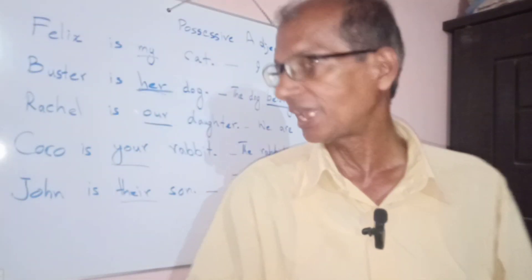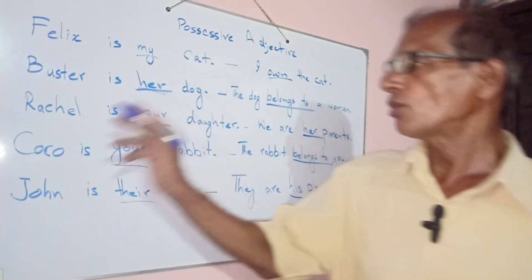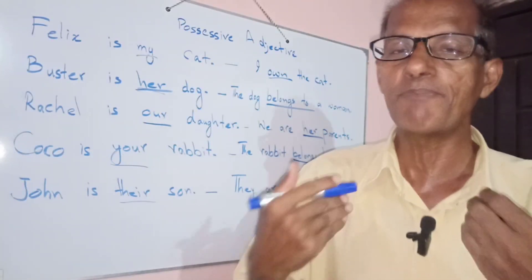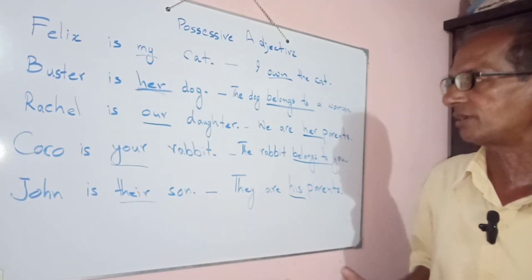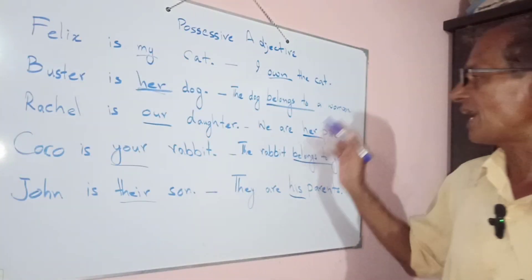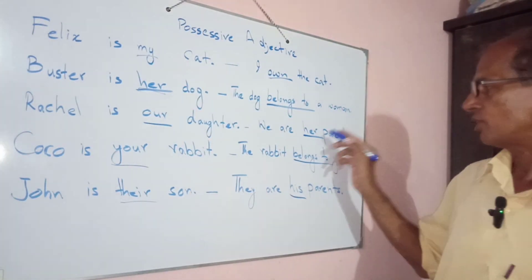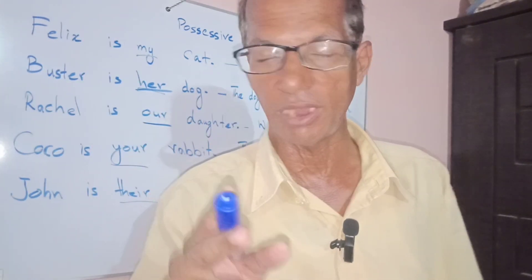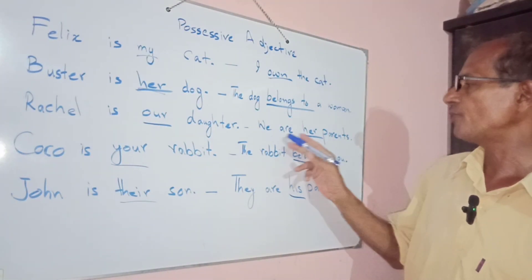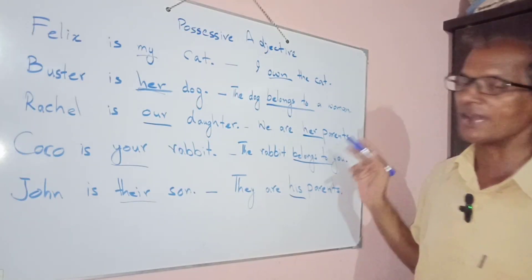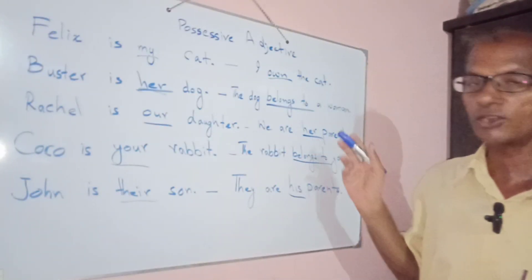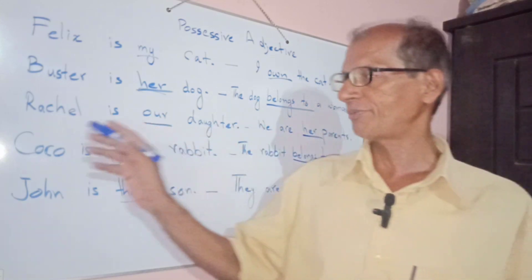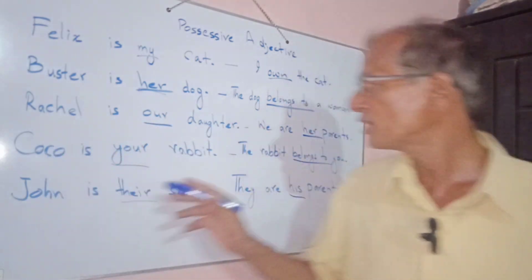Rachel is our daughter. Rachel hamari beti hai. Rachel is our daughter. We are her parents. So 'her' is used here because Rachel is a girl. We are her parents — 'her' is expressing and defining that.